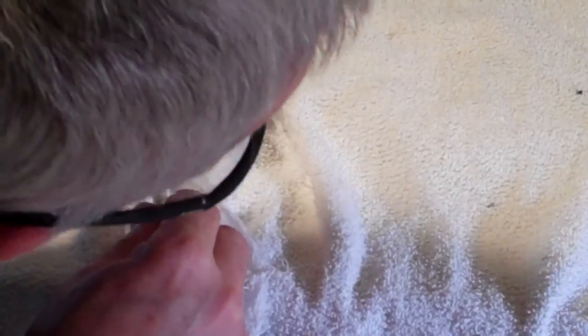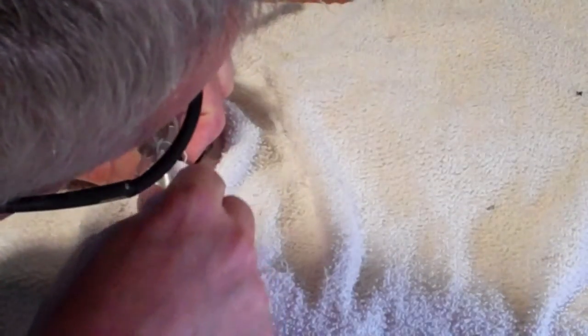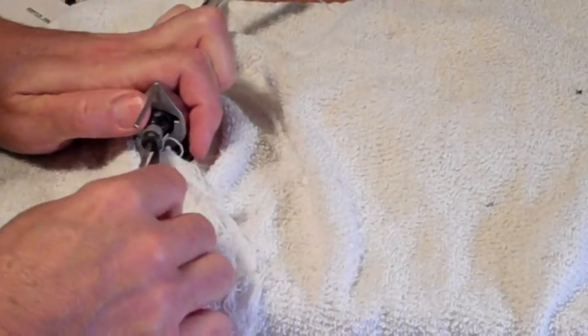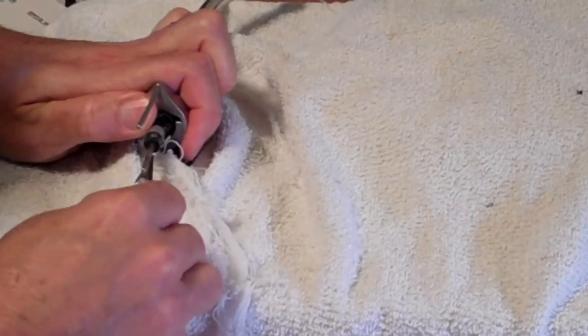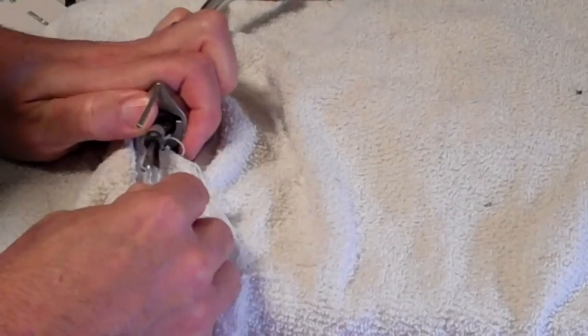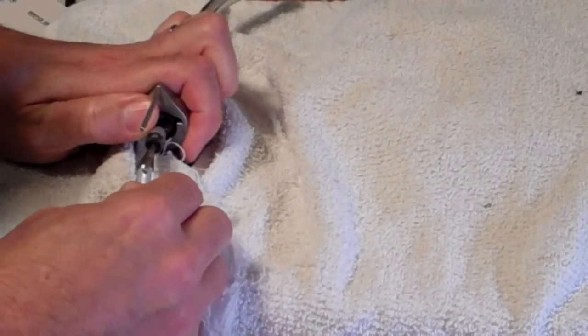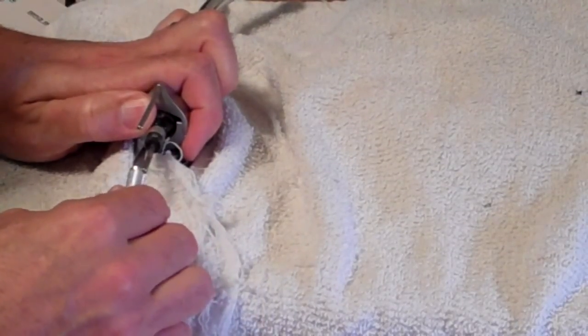So I'm going around the whole tube with the X-Acto knife, pushing it in, I'd say about a quarter of an inch, just trying to break that seal of the adhesive. So when I go to remove this, it's going to come out as much as possible in one piece.